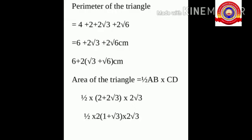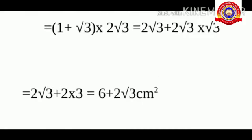Area of the triangle equals half into AB into CD, which is half into (2 plus 2 root 3) into 2 root 3. That is half into 2 into (1 plus root 3) into 2 root 3, giving (1 plus root 3) into 2 root 3, which equals 2 root 3 plus 2 root 3 into root 3, equal to 2 root 3 plus 6, that is 6 plus 2 root 3 centimeter square.